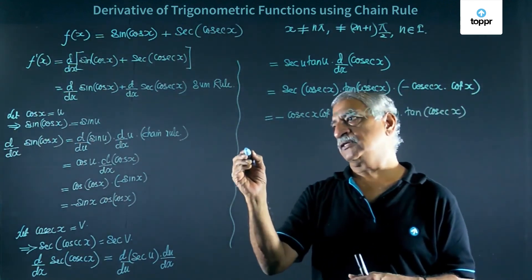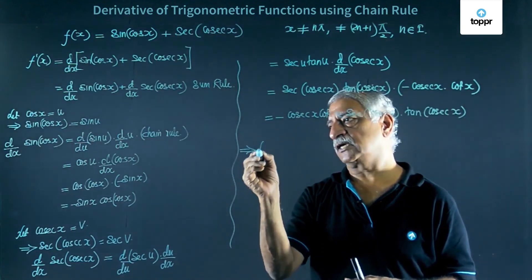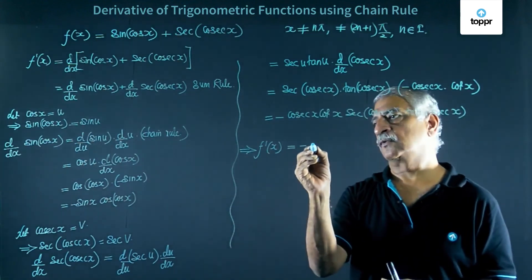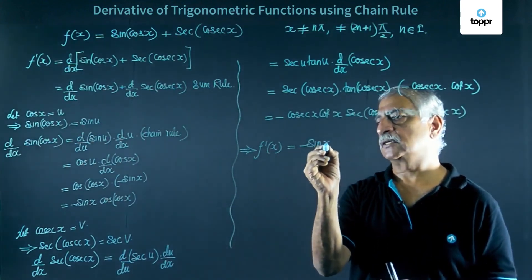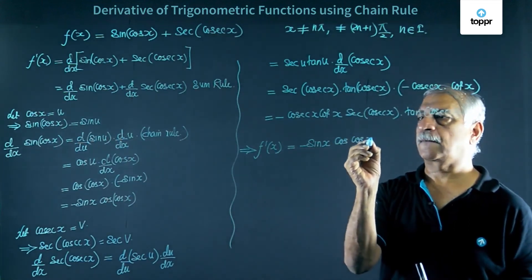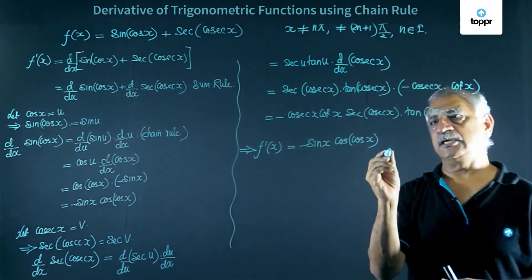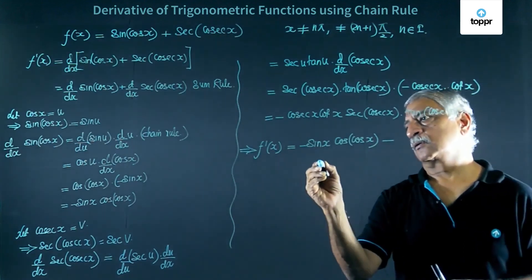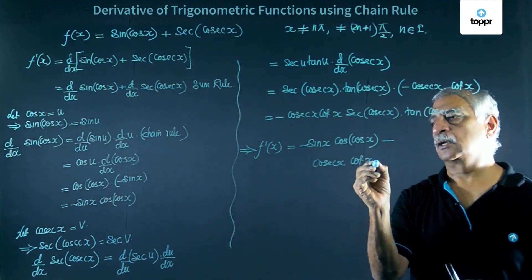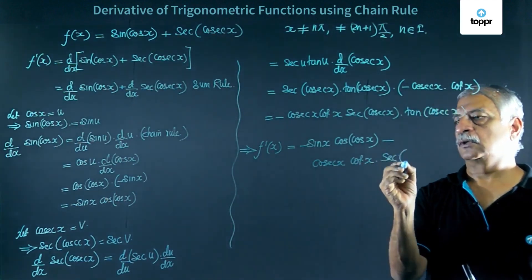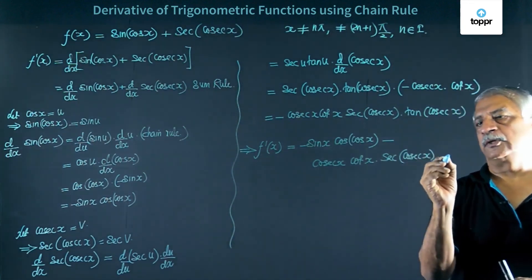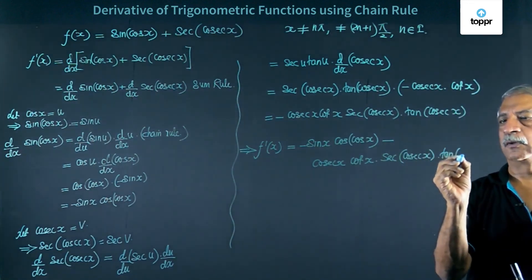sec of cos x into tan of cos x. This implies f dash x is equal to minus sin x cos of cos x minus sin x sec of cos x tan of cos x.